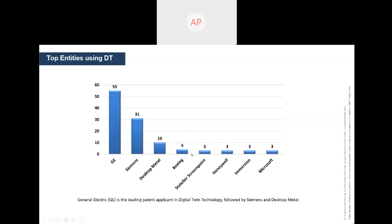These are the top companies that are currently using digital twin. General Electric and Siemens are topping that list, and more companies are also coming into digital twin platforms. You can see how much digital twin technology is currently growing.